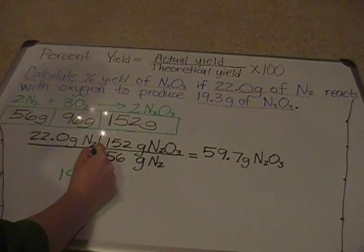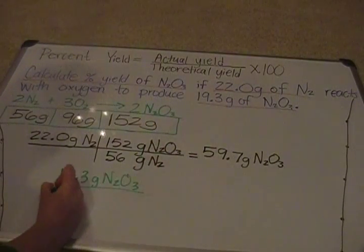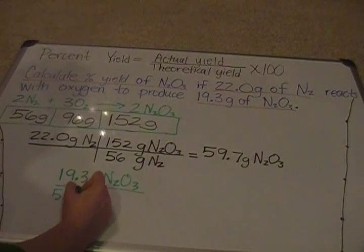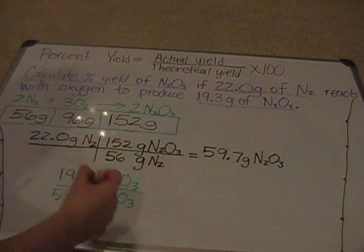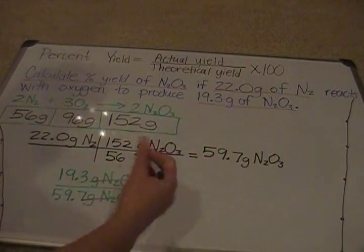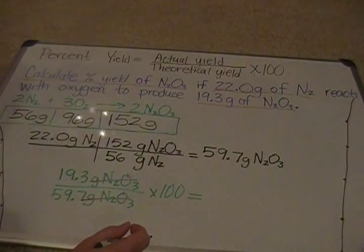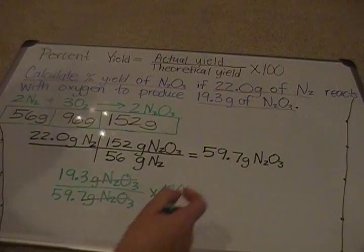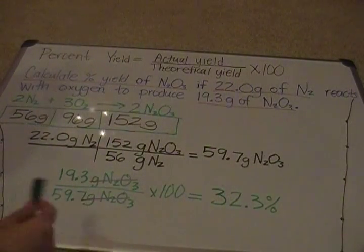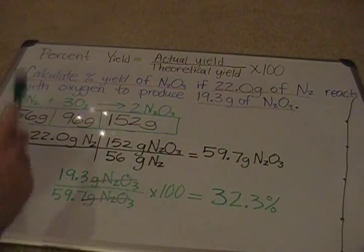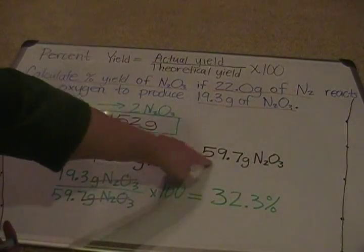Percent yield equals actual yield divided by theoretical yield, times 100. So: 19.3 grams N2O3 (actual) divided by 59.7 grams N2O3 (theoretical) — notice the units cancel — times 100. This gives us 32.3%. So 32.3% is the percent yield of dinitrogen trioxide from this experiment, where we only produced 19.3 grams when we should have produced 59.7 grams.